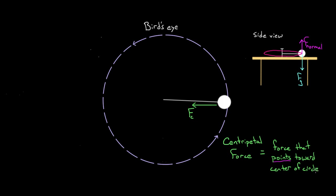This is our first big common misconception: people think the centripetal force is a new kind of force, but it's not. It's just one of the forces we already know — friction, normal force, tension, or gravity — that happens to be pointing toward the center of the circle and causing an object to move in a circle. In this case, there's a rope tied to the mass, and that rope pulls on it. When a rope pulls, we call that the force of tension. So now we know what kind of force is acting as the centripetal force.